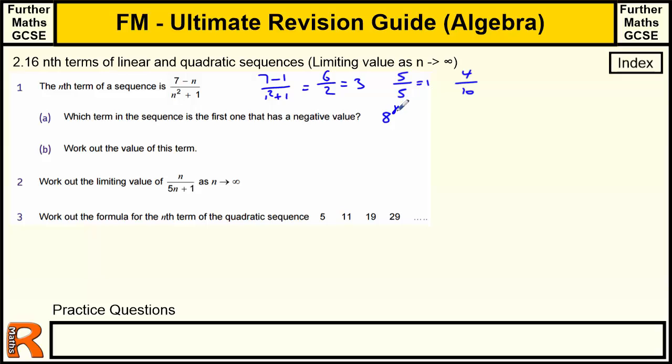So it's going to be the eighth term. It's going to be the first negative one, because 7 take away 8 is negative 1, and that's going to make the whole thing negative. Work out the value of this term, so 7 take away 8 like I said, and 8 squared plus 1, so you've got minus 1 over 64 plus 1 is 65, so minus 1/65 will be the eighth term, the first negative one.